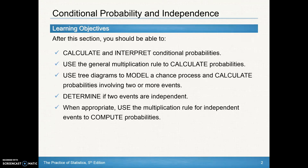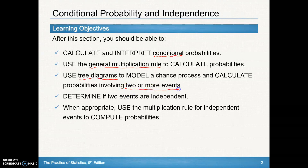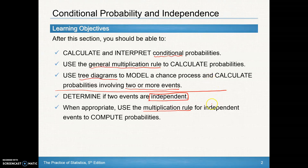We're going to calculate and interpret conditional probabilities, define what conditional probabilities are, and learn the general multiplication rule. We'll use tree diagrams to help calculate probabilities involving two or more events, determine if two events are independent, and use the multiplication rule for independent events when appropriate. Day one covers the first part, and day two covers the rest.